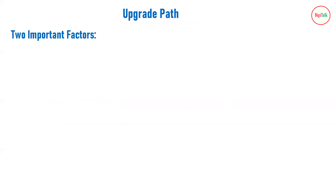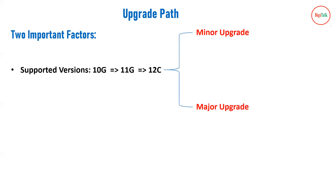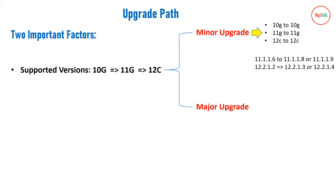When talking about upgrade paths, there are two important factors. First is minor versus major upgrade. In Oracle middleware we have 10g, 11g, and 12c versions. A minor upgrade means upgrading within the same major version — for example, from 11.1.1.6 to 11.1.1.8 or 11.1.1.9, or from 12.2.1.2 to 12.2.1.3 or 12.2.1.4. A major upgrade means upgrading from 10g to 11g or from 11g to 12c.